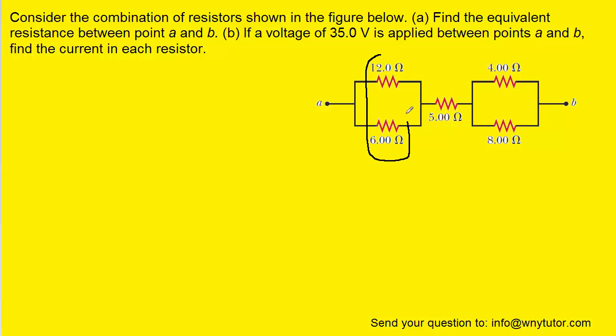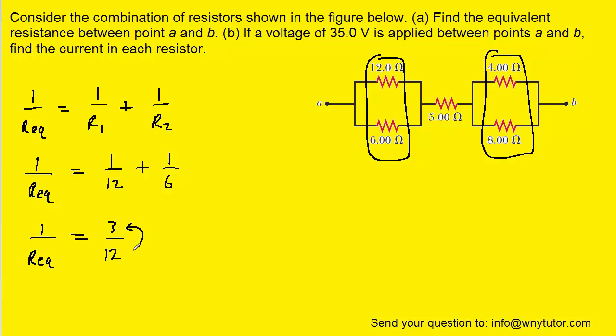We would first note that these two resistors right here are in parallel, and these two resistors are also in parallel. When resistors are in parallel, the following equation applies. For the first pair of parallel resistors, we plug in the resistance of 12 ohms in here and 6 ohms into the second one. We add these two fractions together. There's a neat little trick whereby if we invert both sides of this equation, we would get Req, and then we would also get 12 over 3, which simplifies to just 4. So that means that these two resistors, when combined, have a total resistance of 4 ohms.